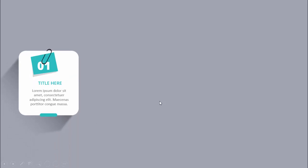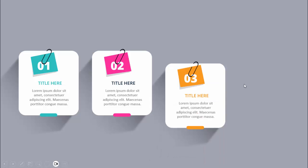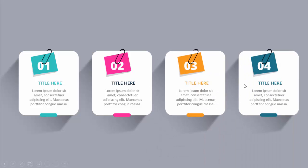In today's tutorial I'm going to show you how to create a four options infographic slide in PowerPoint. When I click it will show the first option — I have put option one here with a post-it note, bound together with the help of a clip. You can add the title, the detail text, and I've added some shadow effect. When I click, different colors show option two, option three, and option four.